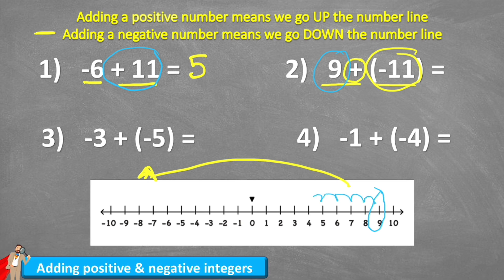One, two, three, four, five, six, seven, eight, nine, 10, 11. And I land on negative two. Therefore nine plus a negative 11 leaves us with negative two.